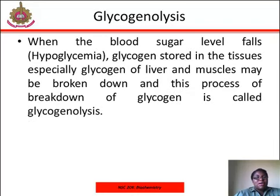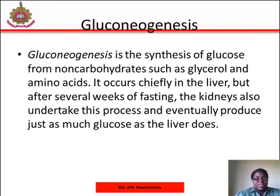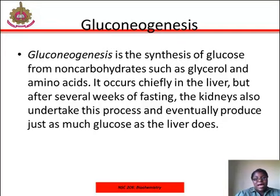When the blood sugar level falls, that is when there is hypoglycemia, glycogen stored in the tissues — especially glycogen of the liver and muscles — may be broken down, and this process of breakdown of glycogen is called glycogenolysis. Gluconeogenesis is the synthesis of glucose from non-carbohydrates such as glycerol and amino acids, and it occurs chiefly in the liver. But after several weeks of fasting, the kidneys also undertake this process and eventually produce just as much glucose as the liver does.